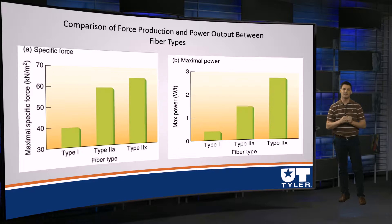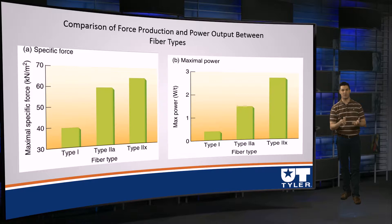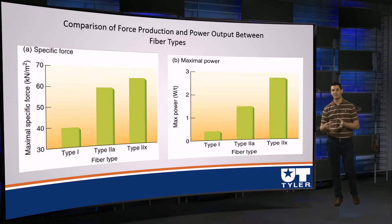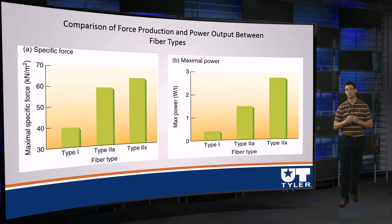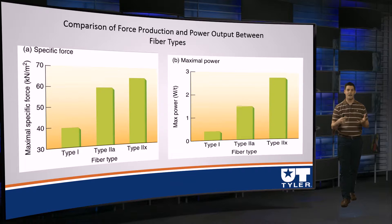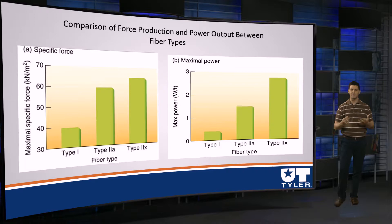You don't have to know the specific values on the y-axis — just know the trend. We have the lowest amount of force generation capacity in a type 1 fiber. If we then go to our fast twitch fibers, both 2A and 2B or X fibers, you'll see higher levels of force: type 2A higher, and type 2B or X the highest amount of specific force capacity. This is actually a relatively new concept. When I was an undergraduate, we were taught that specific force was the same regardless of fiber type. With advancing techniques, we've been able to look at individual muscle fibers much more closely and tease out these differences.